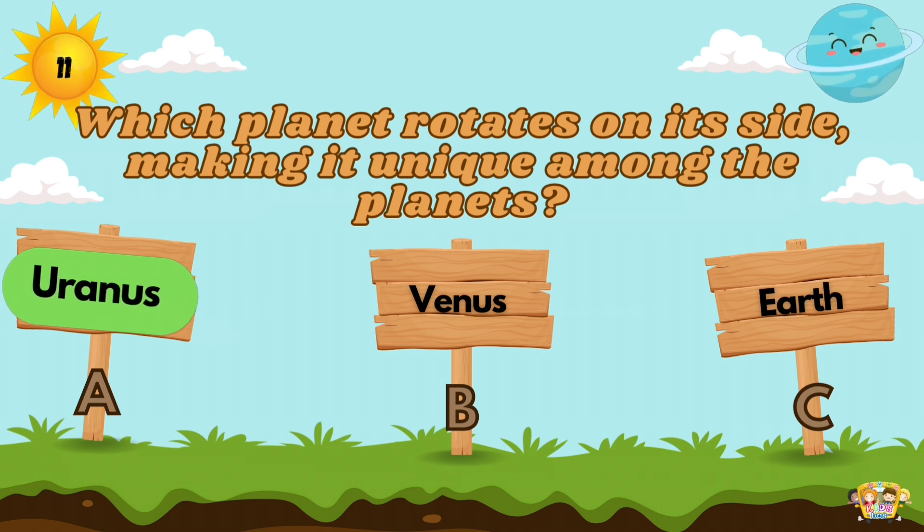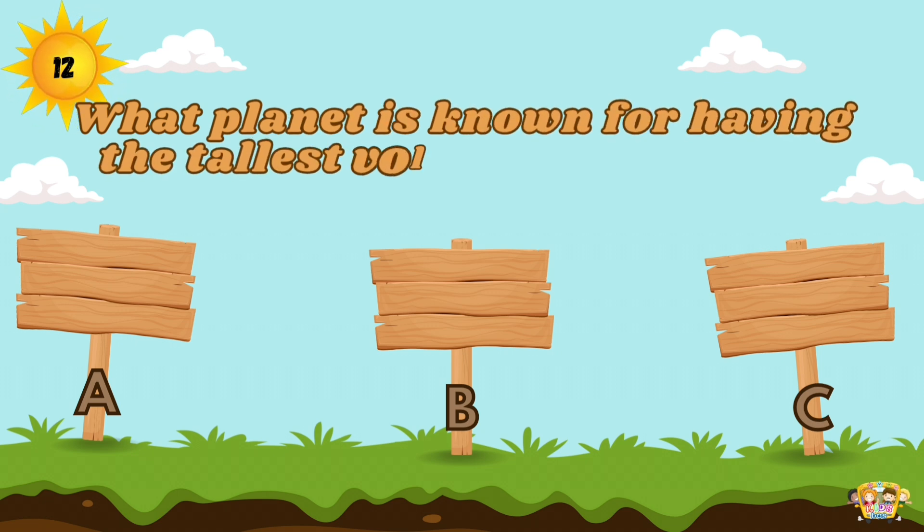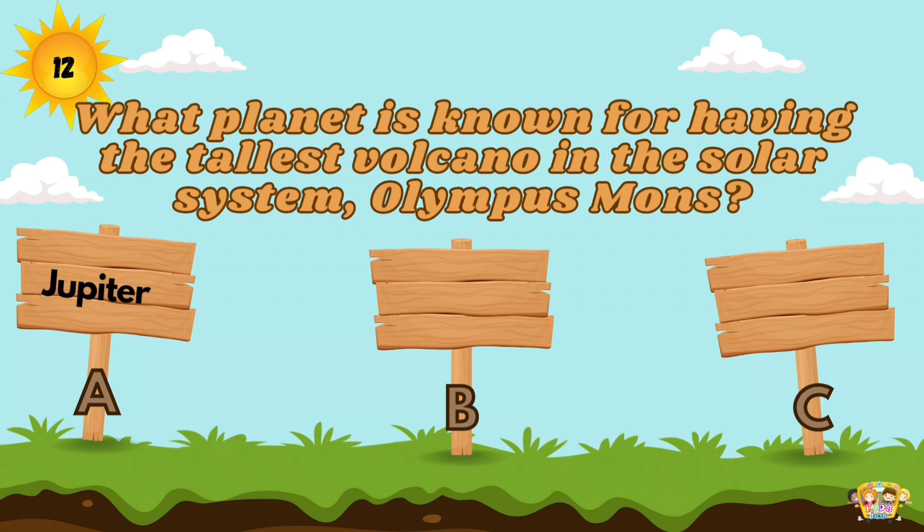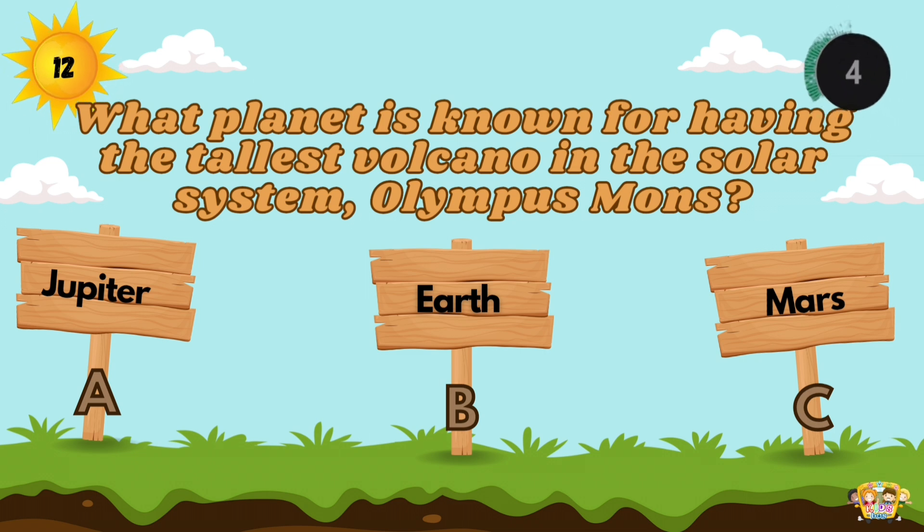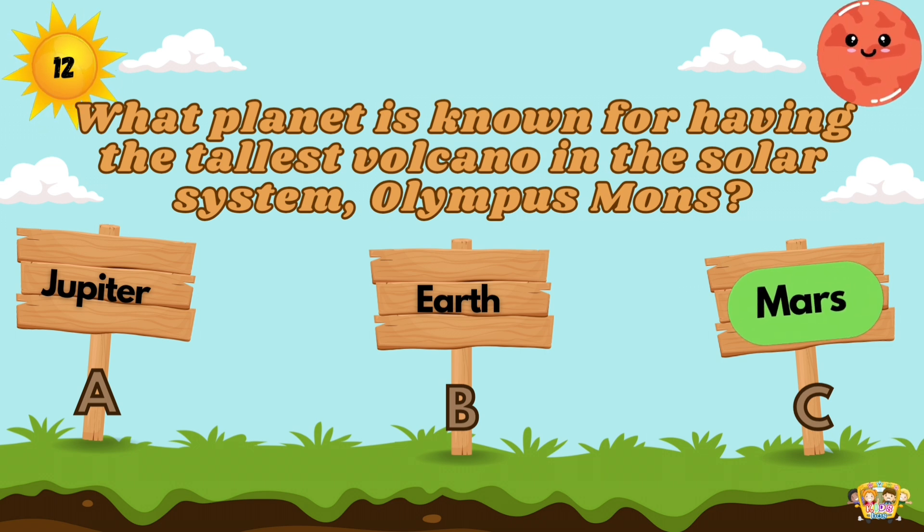Uranus is tilted at an extreme angle of about 98 degrees. What planet is known for having the tallest volcano in the solar system, Olympus Mons? Olympus Mons is a shield volcano on the planet Mars.